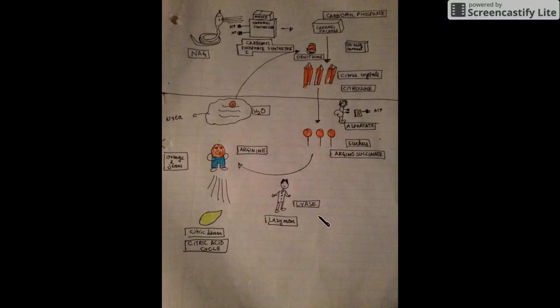Then what happens, argininosuccinate in the presence of enzyme lyase, this lazy man represents lyase, is converted into arginine, orange with the jeans, arginine. And during this process he's releasing fumes, and I'm sorry I forgot to mention that these fumes are fumarate. Fumarate that goes into the citric acid cycle.